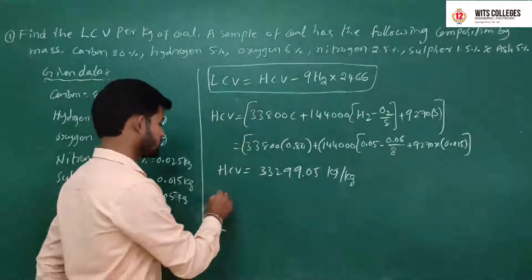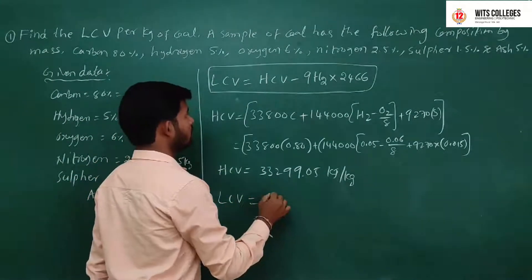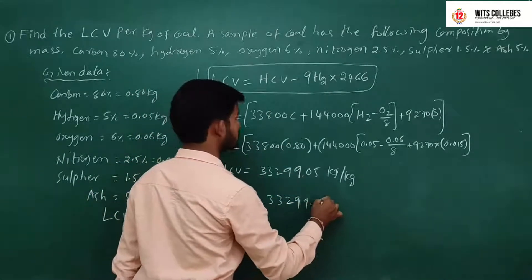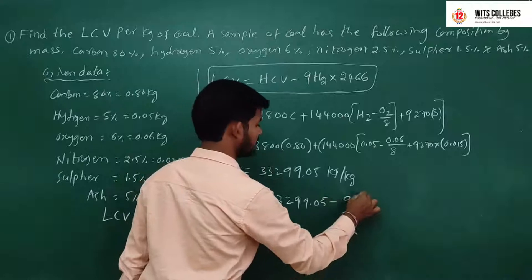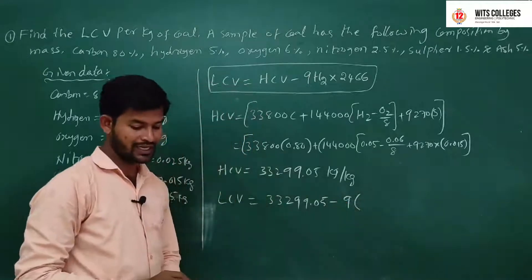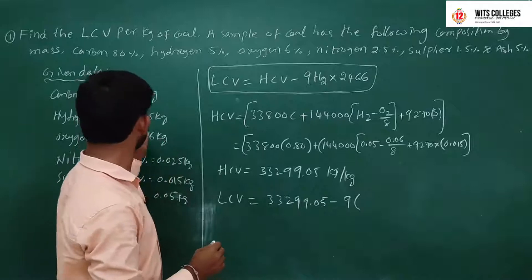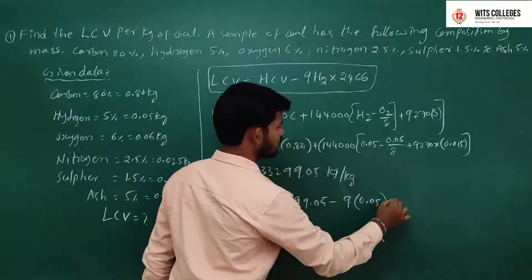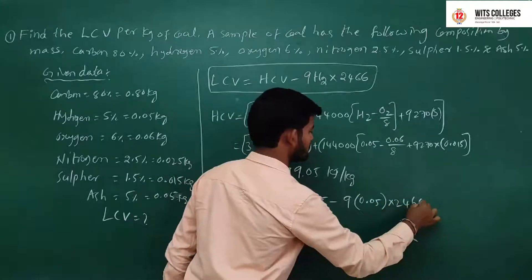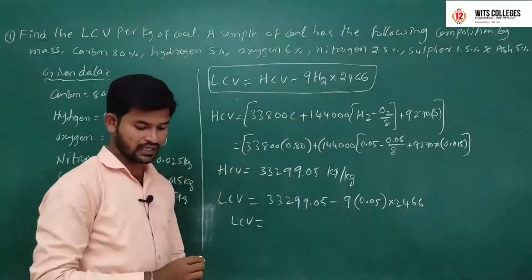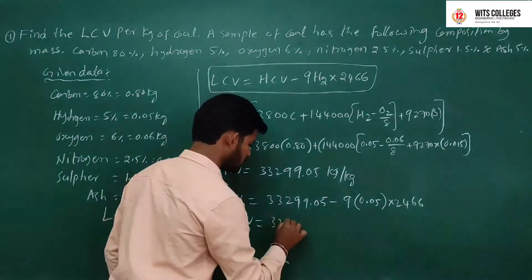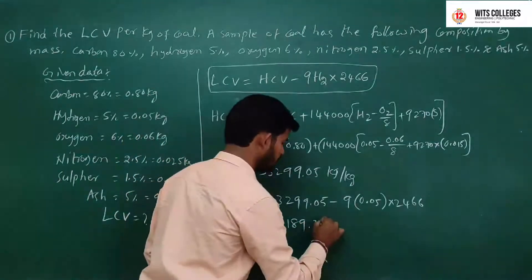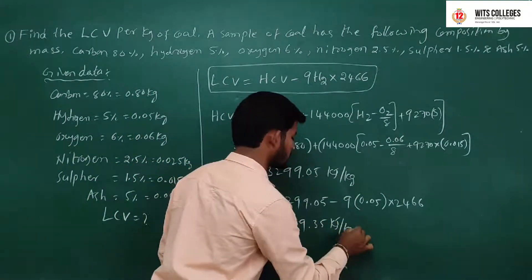Now substituting the H₂ value into the LCV equation: LCV = 33,299.05 − 9 × 0.05 × 2466, giving the lower calorific value of 32,189.35 kJ/kg.